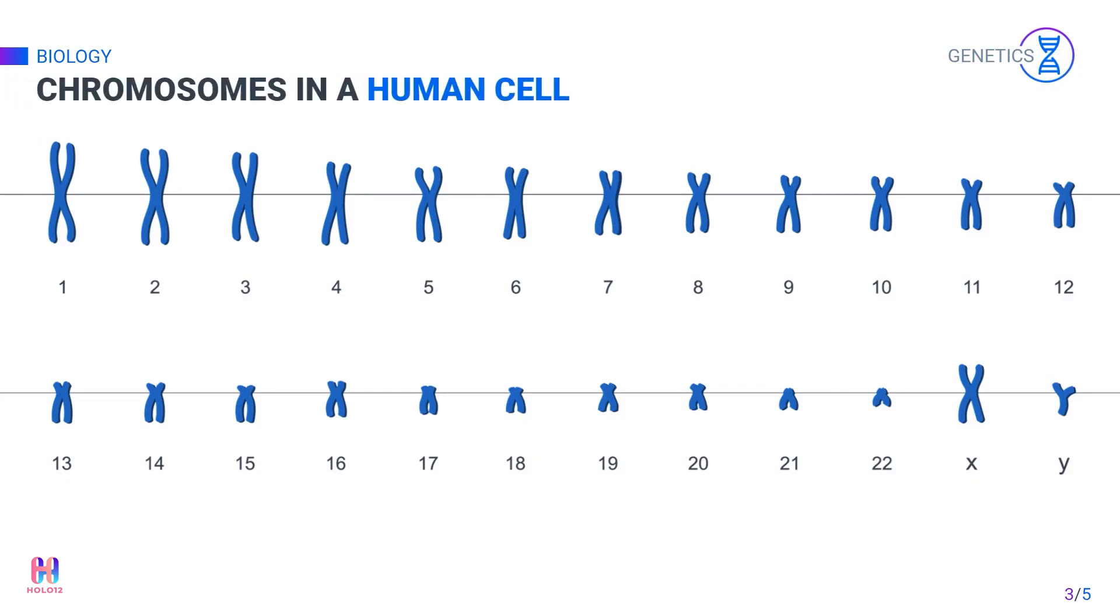Chromosomes in a human cell. Each human cell contains 23 different types of chromosomes, and two sets of chromosomes are present in each cell. Unlike all the other cells, the gamete cells, that is the sperm and the ovum, contain a single set of chromosomes.